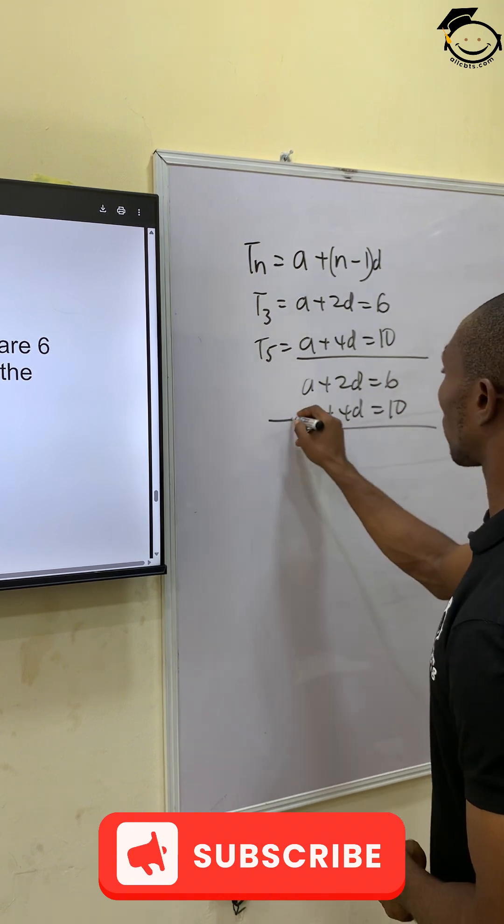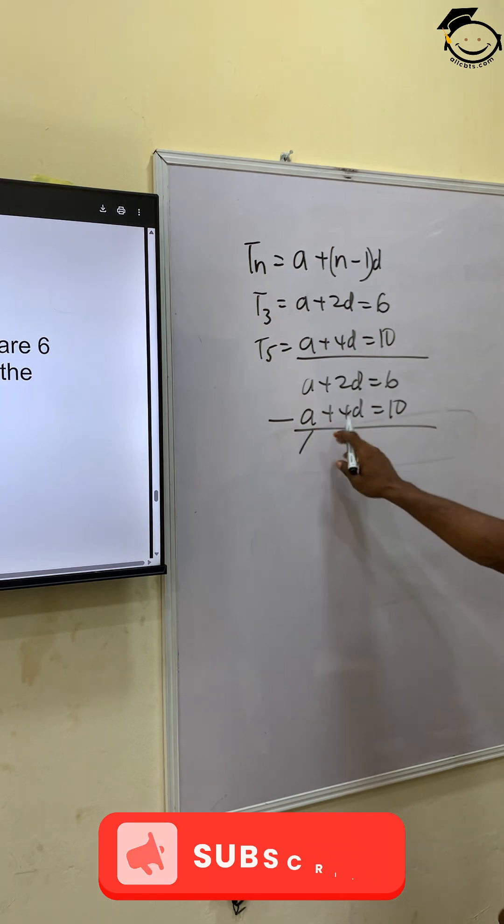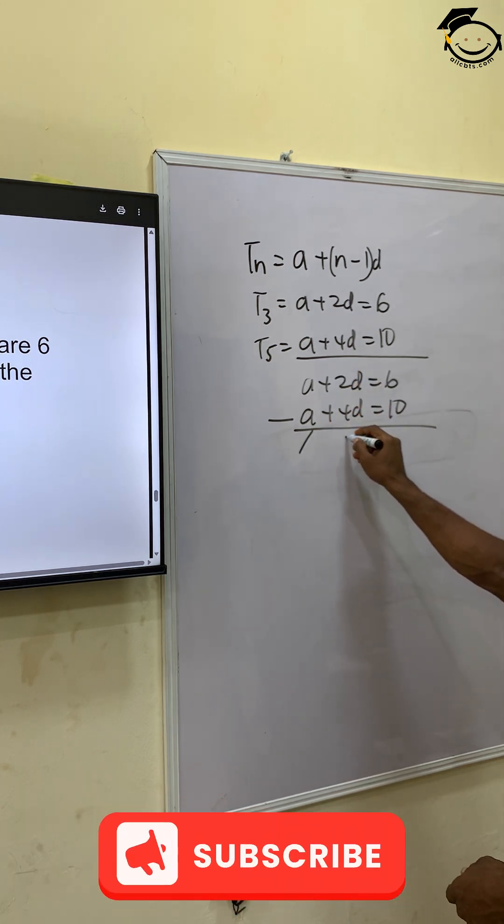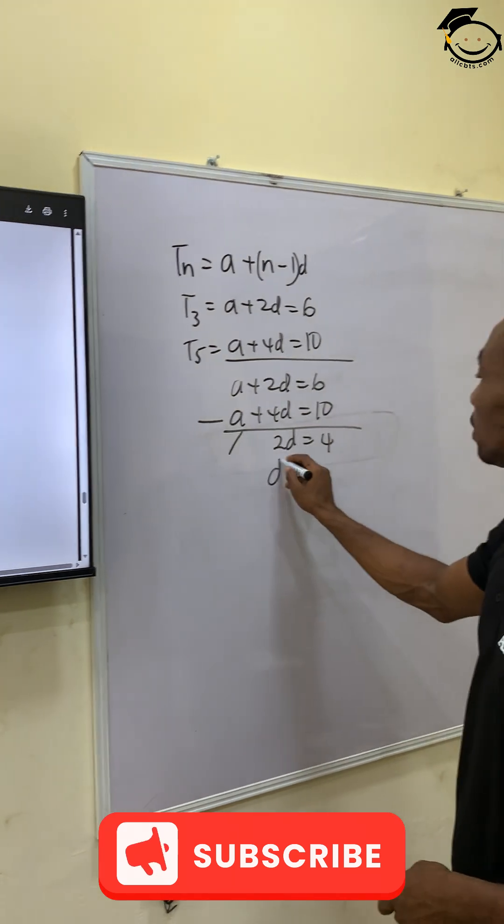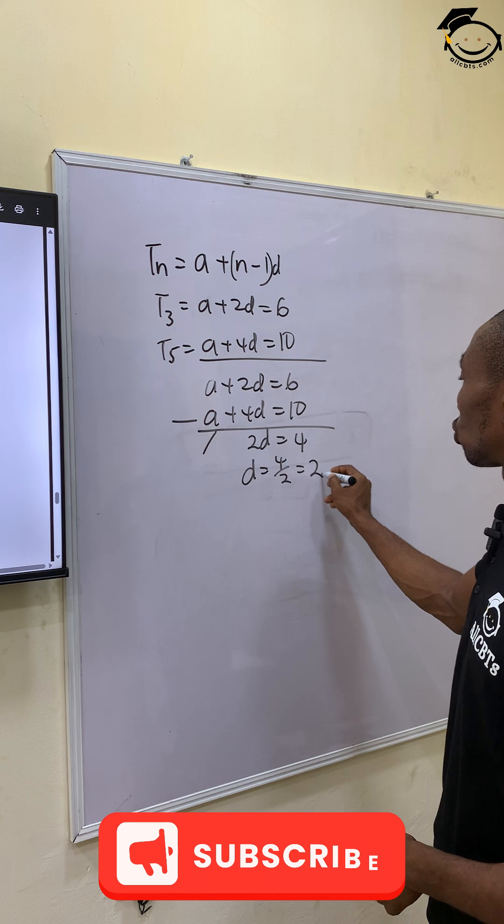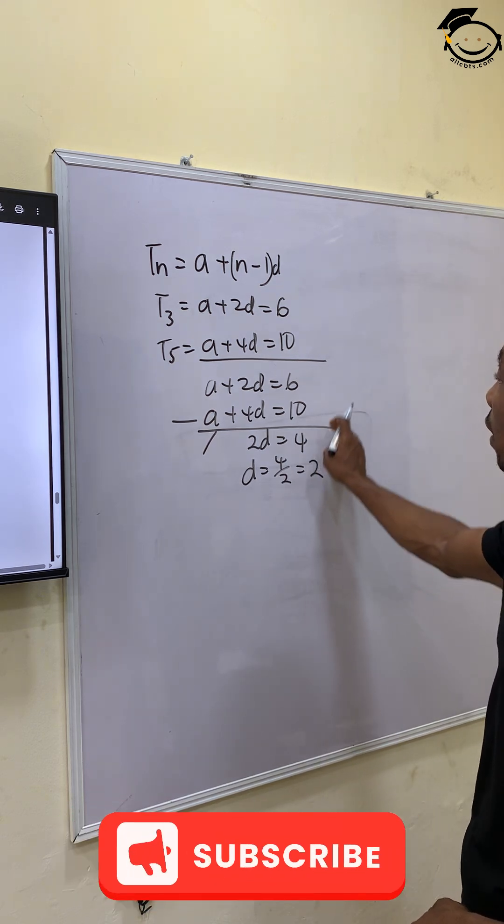Subtracting, A minus A cancels out. 4 minus 2 gives 2D, and 10 minus 6 gives 4. So D equals 4 over 2, which is 2.